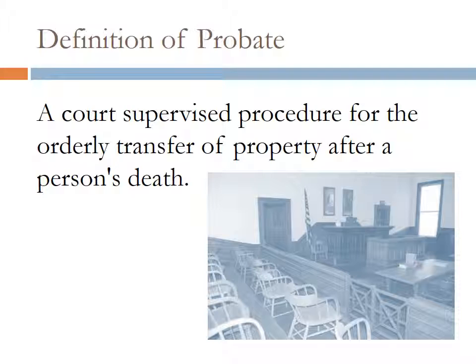In modern times we have different levels of probate. We have informal and what are called summary probates for handling very small estates. Generally the concerns have to do with taxes and titled property — such as real property, houses, land, motor vehicles, boats, and other things that require a title.